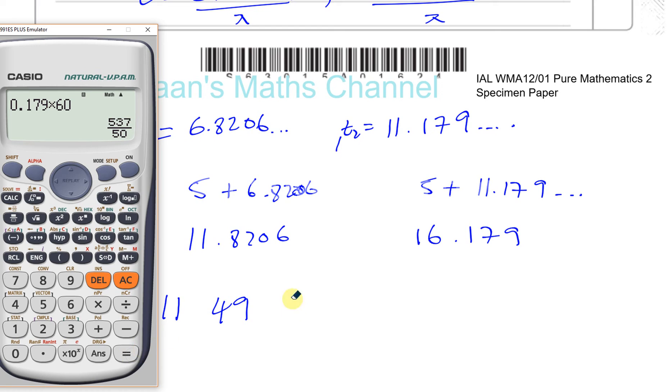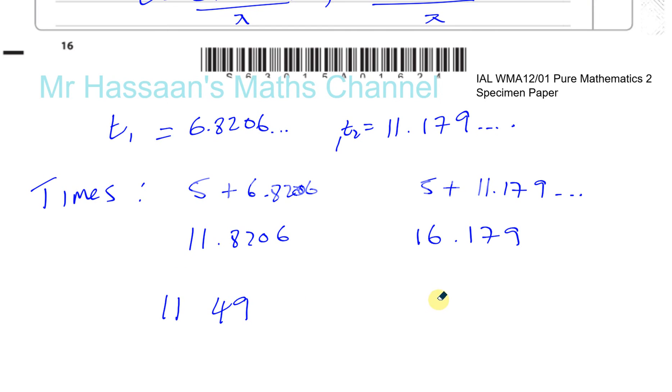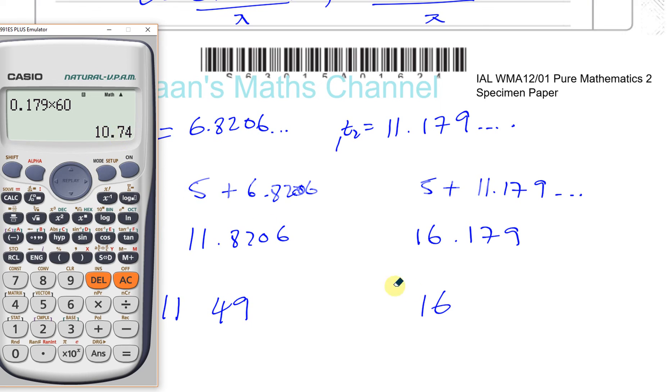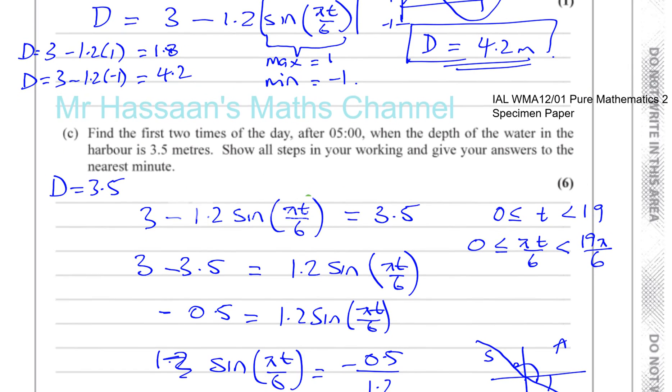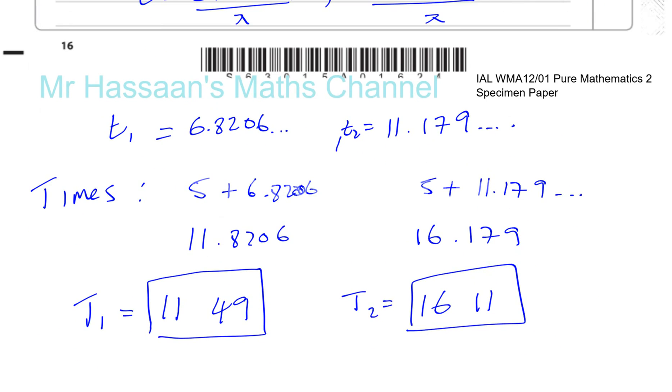That gives you, so that's 11 and 11. No, 16, 16 hours and 11 minutes. 10.74. So that's 16:11. So these are the two times. This is time one, and this is time two. The first two times when the water reaches that height of 3.5 meters. And there we have the answer to this question.